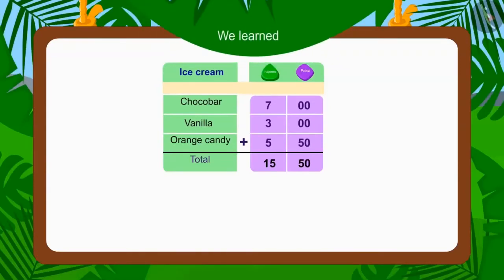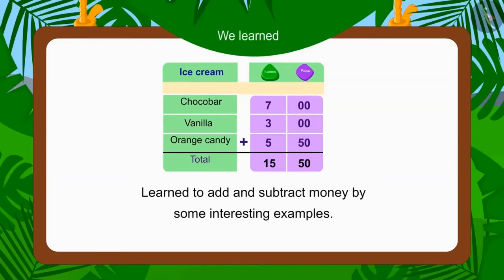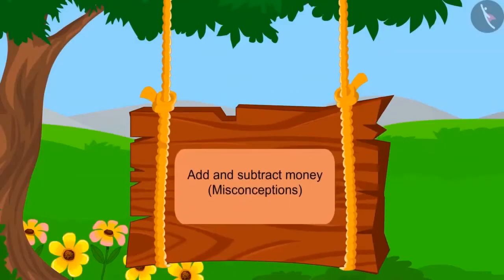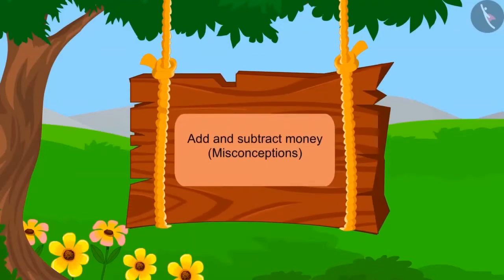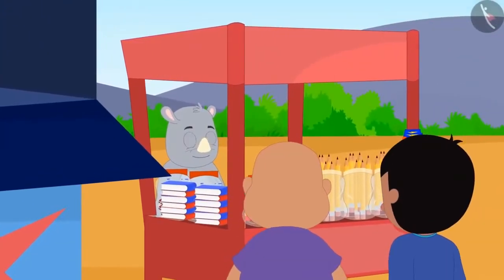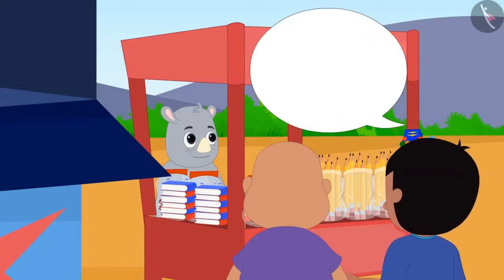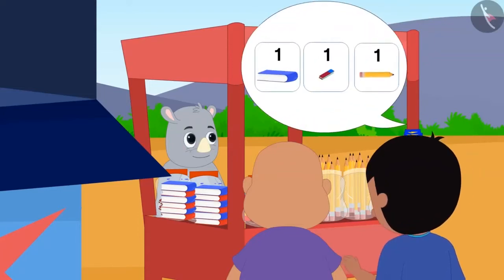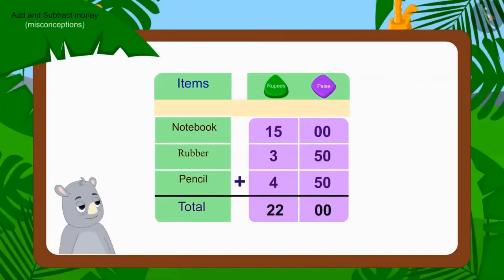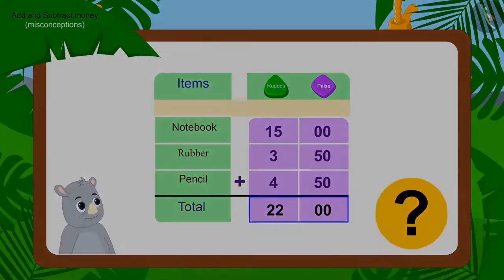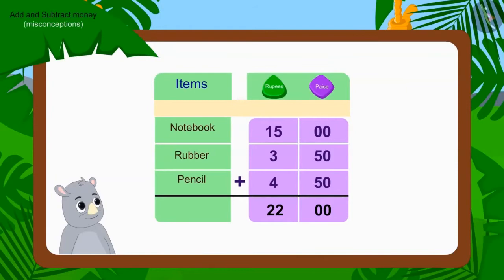Hello, kids! In the previous video, we learned to add and subtract money with some interesting examples. In this video, we will look at some common mistakes related to it. Raju and Bablu have come to Gaggu's shop to buy notebooks, pencils and some other items. Raju asked Gaggu for one notebook, one rubber and one pencil. Gaggu added the value of all three items — children, tell me if Gaggu's addition is correct. No, Gaggu has done the addition wrong. Kids, can you tell what mistake Gaggu made? Let's find out by going through the addition together.